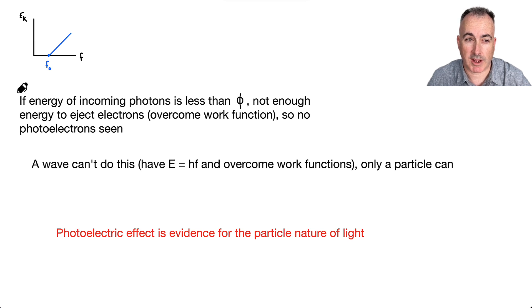So just to reiterate here, if the energy of the incoming photons is less than phi, in other words, if the energy is less than this work function, what happens then? Remember, you have E equals hf. So that means if your frequency is too low, that means your energy is too low, and you don't have enough energy to kick off these electrons. That means you're going to see no photoelectrons. Now, it turns out a wave can't do this. Only a particle can.